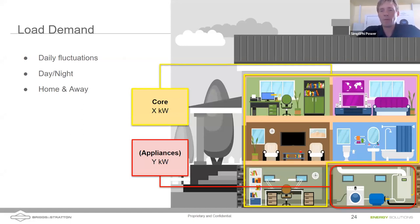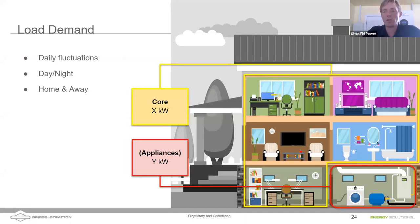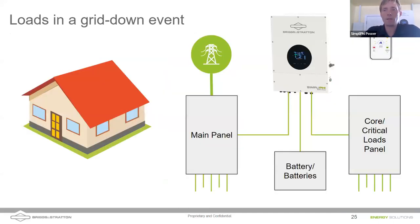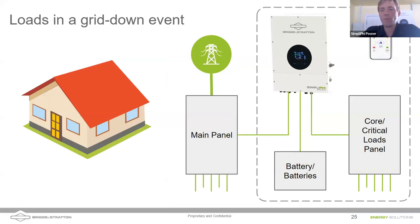During an outage, you probably won't want to back up everything. The main panel becomes isolated from the inverter to prevent sending power back to the grid where workers could be on the lines. Batteries then discharge through the inverter to power critical loads. Our inverters require a critical loads panel to be installed, though other options like the Solark 15K do not.